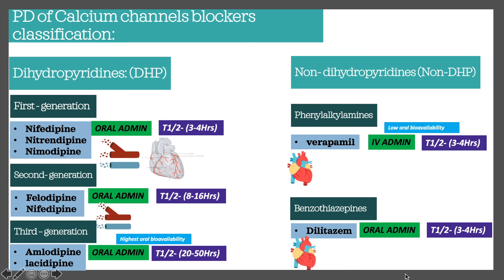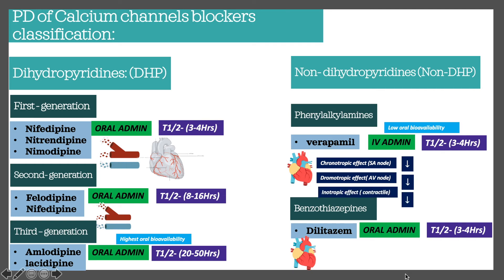First gen DHPs such as nifedipine also work on the vasculature of the myocardium — the coronary arteries. Verapamil has a chronotropic effect (decreases SA node firing), a dromotropic effect (decreased AV node firing), and an inotropic effect (decreased contractility). These three effects are very important and will come up in exams. Diltiazem has mainly the chronotropic and dromotropic effects; it can also have the inotropic effect but the two main ones are chronotropic and dromotropic.